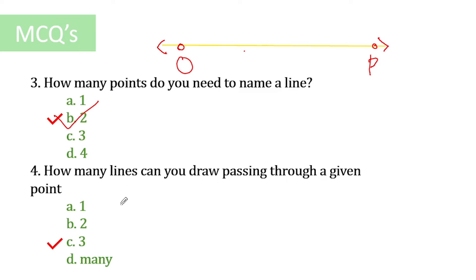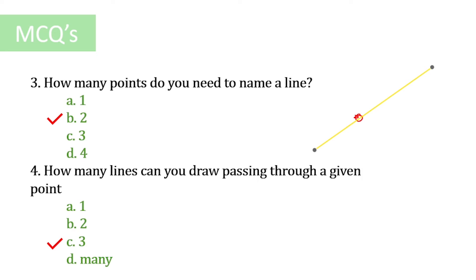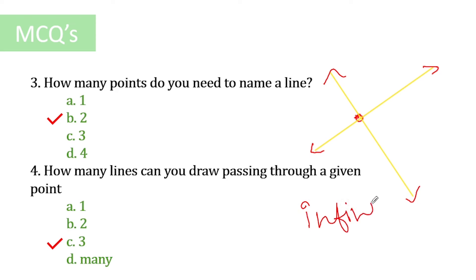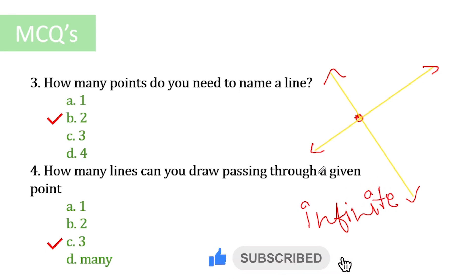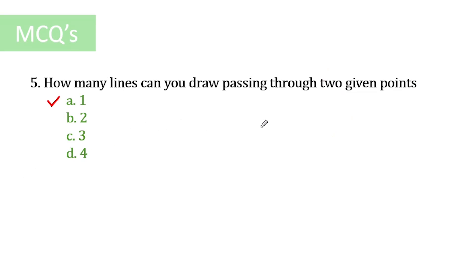The next question: how many lines can you draw passing through a given point? Let's say we have a point. We can draw one line through it, then another line through the same point intersecting the first, and we can keep going like this. We can draw infinitely many lines passing through a single given point, so the answer is infinitely many lines.